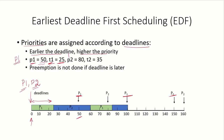For process P2, the period is 80. It has arrived in the system at time unit 0, so next it will arrive at 80, and then at 160. Whenever it is scheduled, it will require the CPU for 35 time units.